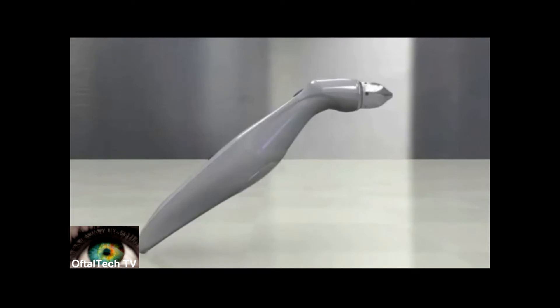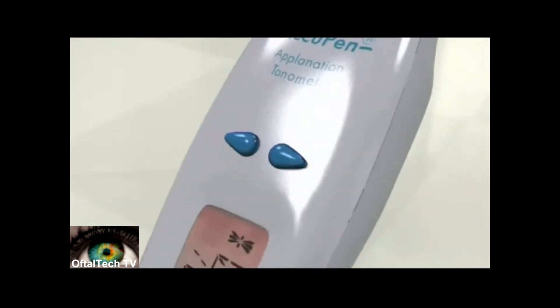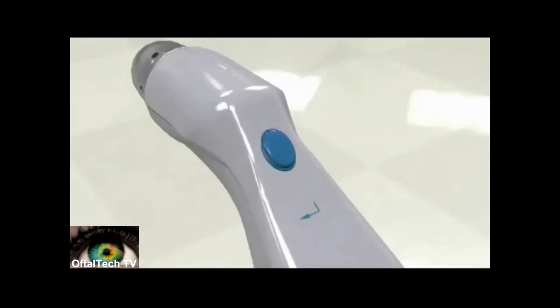To turn on your AccuPen, press any control button. The product information briefly scrolls across the screen. The measurement screen will soon be displayed.